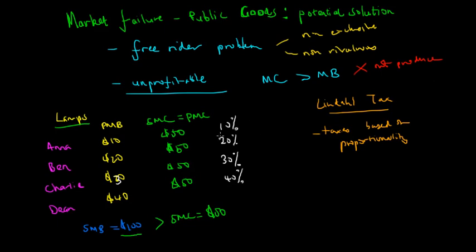So what the Lindahl tax suggests is that they should pay respective to how much benefit they get. And so we can see that 10% of $50 would then be $5, so Anna should pay $5 in tax to contribute to the production of the lamp. Ben should pay $10, Charlie should pay $15, and Dean should pay $20. And if you add all this up, you will get $50. The tax helps the government gather the necessary funds to actually fund the building of this lamp.